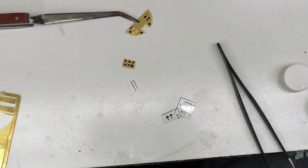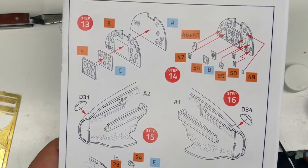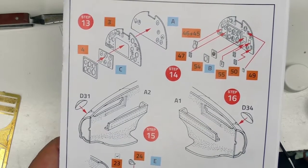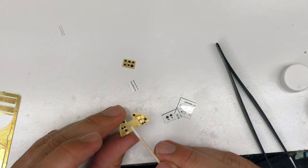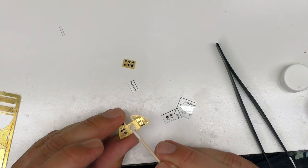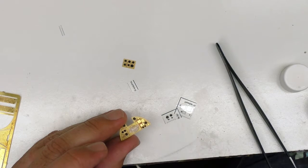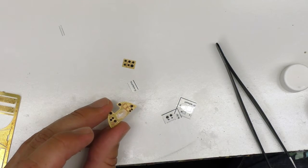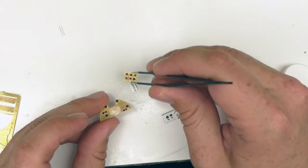There we got that one. Now, these go sandwich on top of each other. Take a little bit more glue. This stuff is nice because you can apply a little bit more of it and not have to worry about it owning everything.